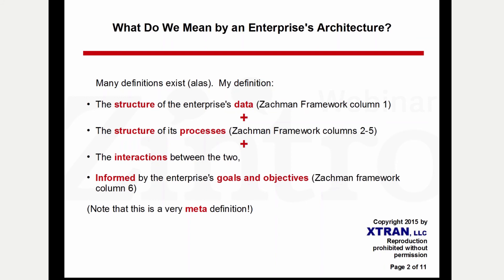For those of you who are familiar with the Zachman framework — which is essentially what John Zachman calls an ontology for enterprise architecture, and I agree with him — I actually arrived at my definition before happening across the Zachman framework, but it turns out to fit very neatly into it. The columns are areas of concern, and the rows are levels of instantiation from very abstract to fully instantiated. Data is his column one, processes are columns two to five, covering what, who, where, and so forth, and the goals and objectives of the enterprise are his column six — the 'why' column.